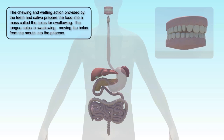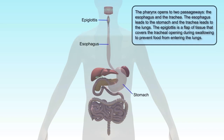The tongue helps in swallowing, moving the bolus from the mouth into the pharynx. The pharynx opens to two passageways: the esophagus, which leads to the stomach, and the trachea, which leads to the lungs. The epiglottis covers the tracheal opening during swallowing to prevent food from entering the lungs.